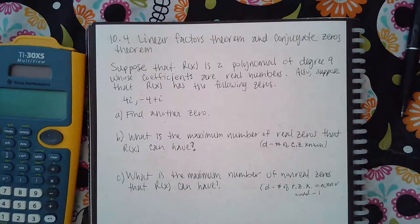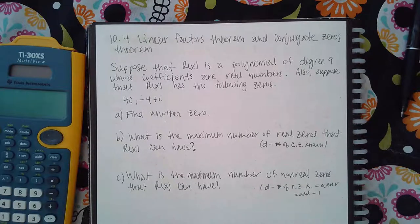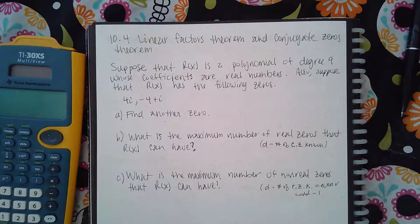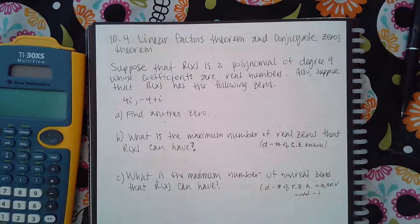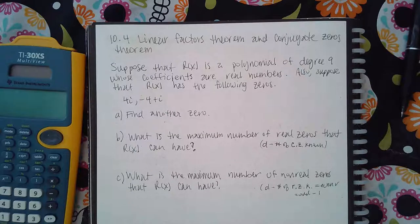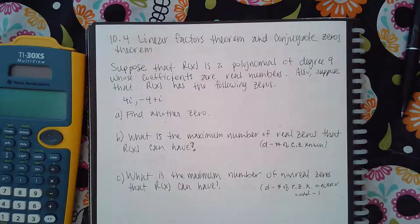Here we have 10.4 Linear Factors Theorem and Conjugate Zeros Theorem. I've already gone over the conjugate zeros theorem in previous topics. If you have one imaginary or complex zero, you automatically have its conjugate as a zero. Suppose that r(x) is a polynomial of degree 9, whose coefficients are real numbers, so you know that the conjugates come in pairs.